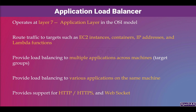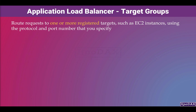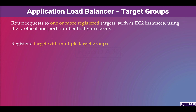Target Groups are where Application Load Balancer forwards incoming traffic to balance the load. Target Groups route requests to one or more registered targets, such as EC2 instances, using the protocol and port number that you specify. You can register a target with multiple target groups, and Application Load Balancer can forward traffic to multiple target groups.